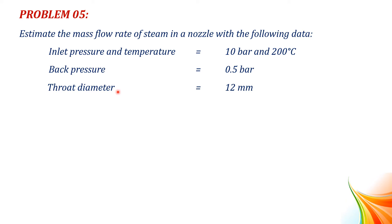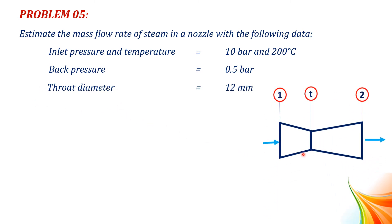In this problem, the throat diameter is given, so we have to consider a convergent-divergent nozzle. The cross section of a nozzle first decreases from its entrance to throat and then increases from its throat to exit. This type of nozzle is known as a convergent-divergent nozzle.